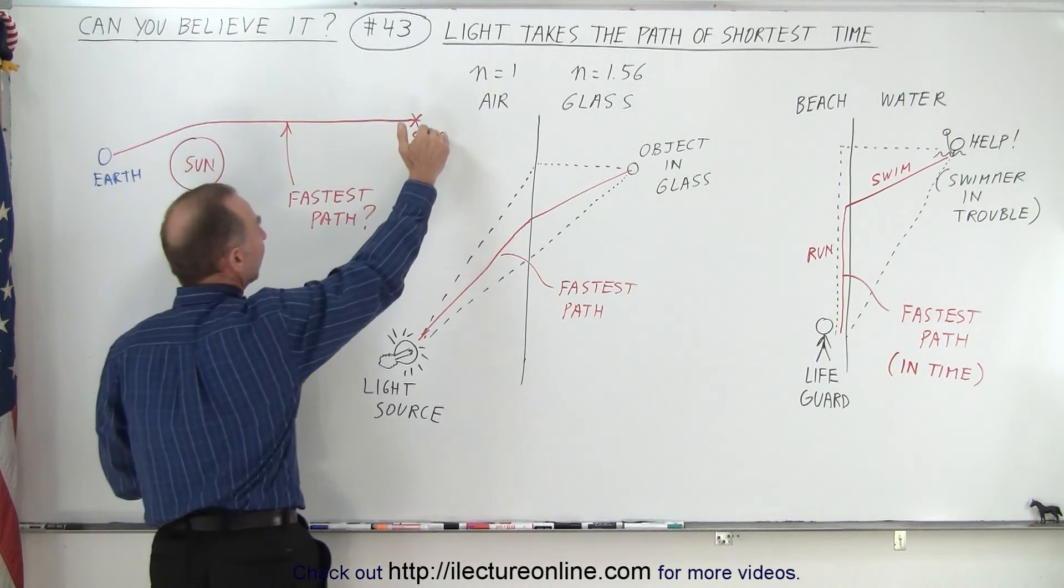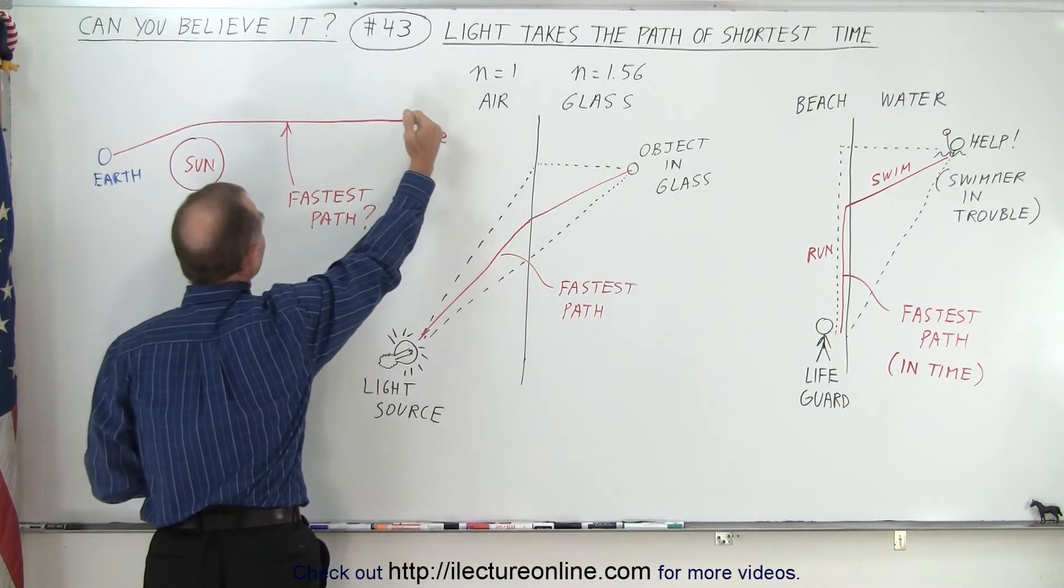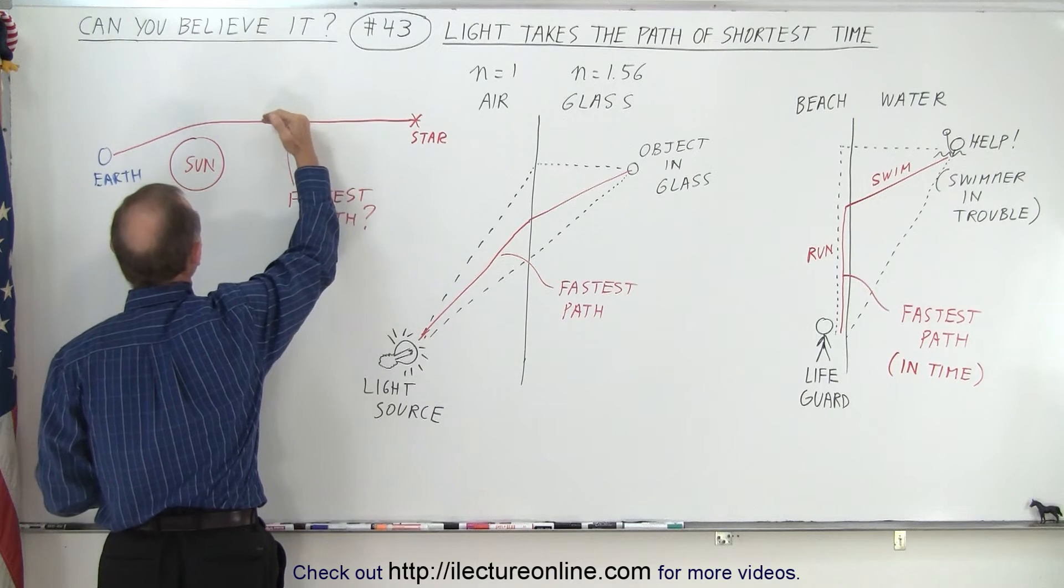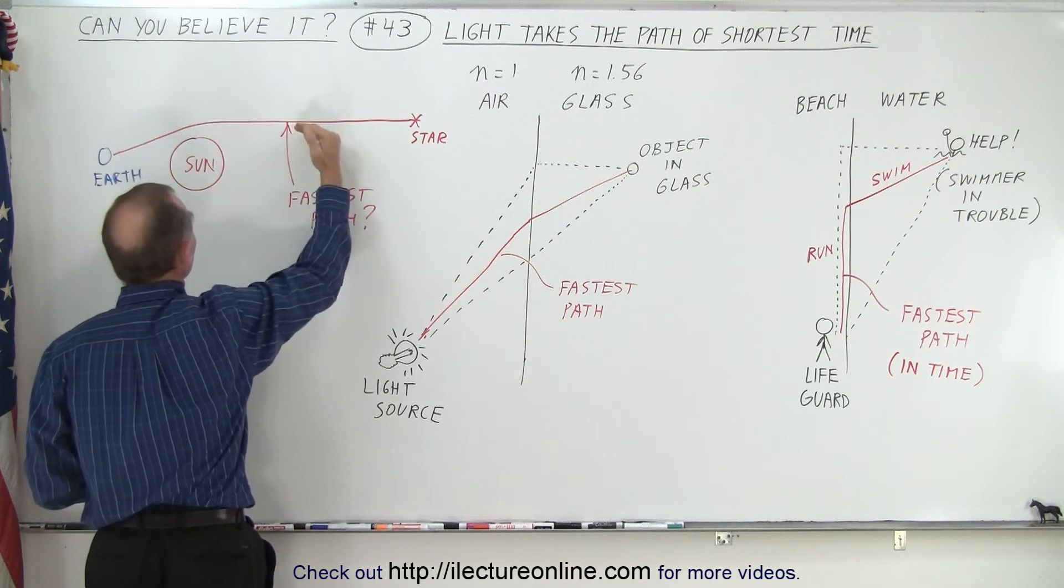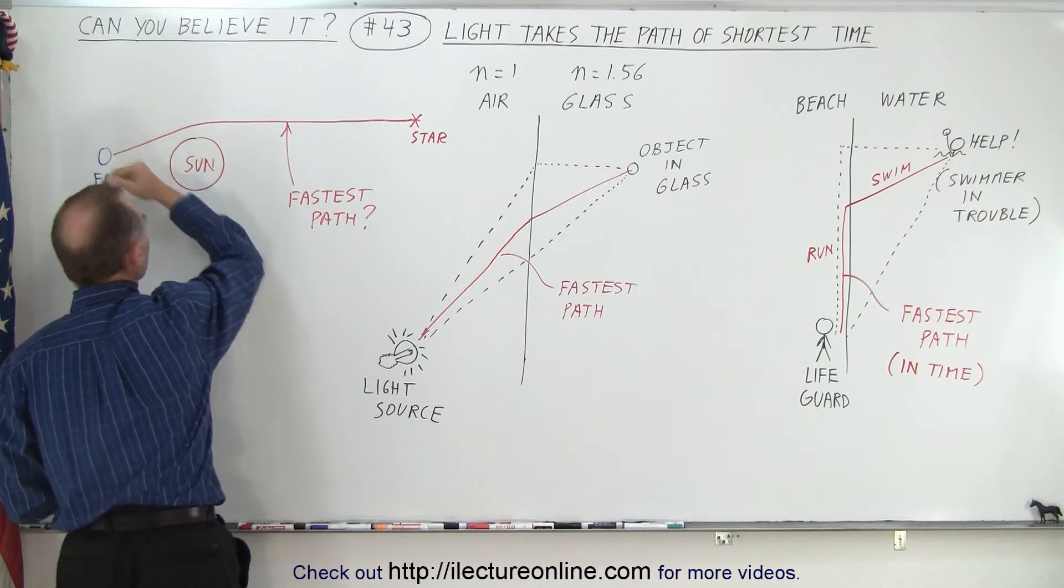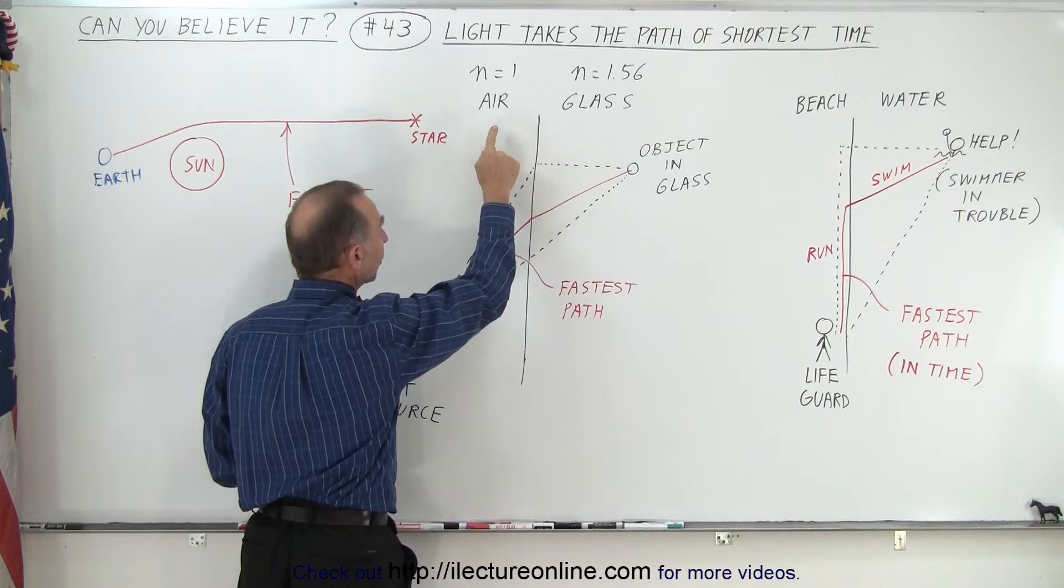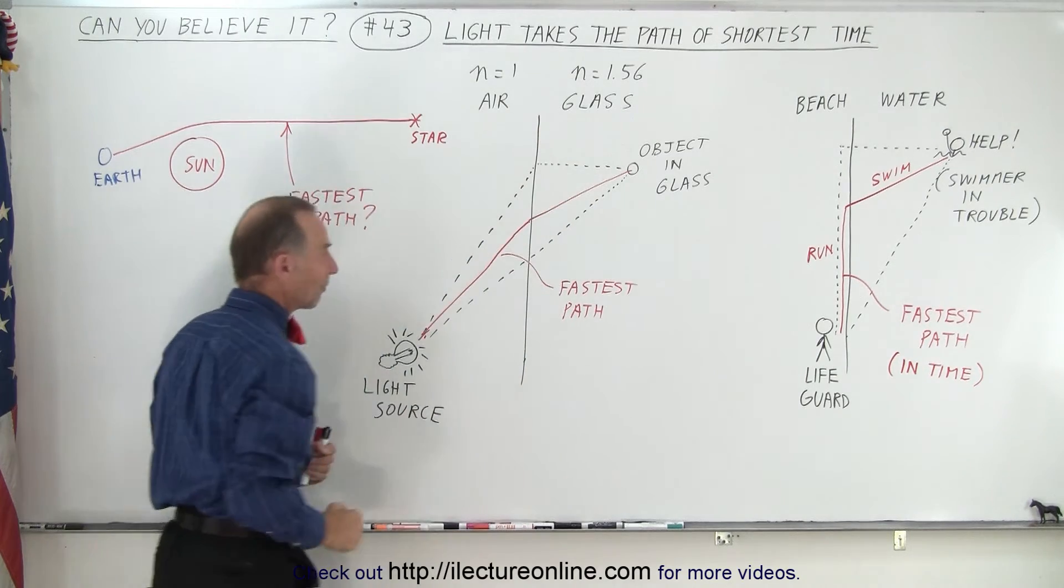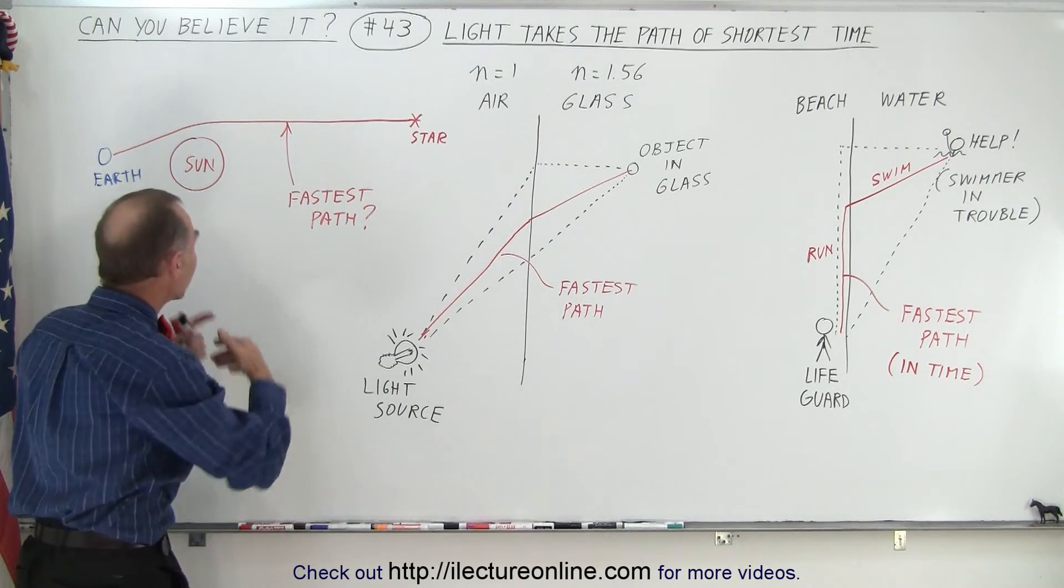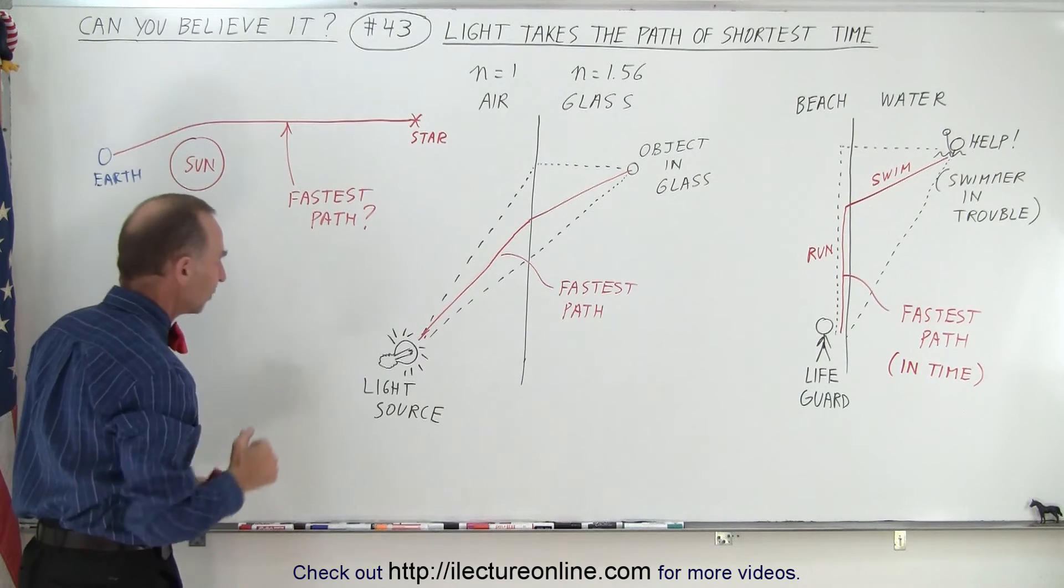So when the light comes from a distant star and ends up traveling right past the sun and on its way to the earth, the light will actually change direction, just like the light will change direction when it crosses a boundary from a low index of refraction to a high index of refraction. But here, it appears to be affected by gravity causing it to change direction.